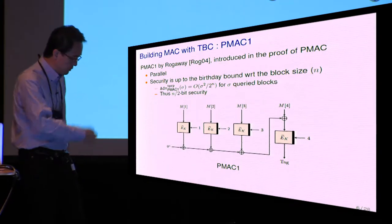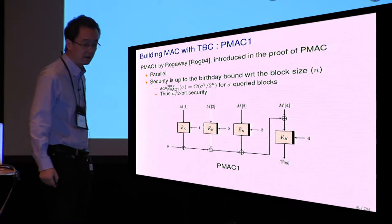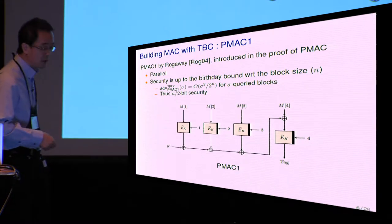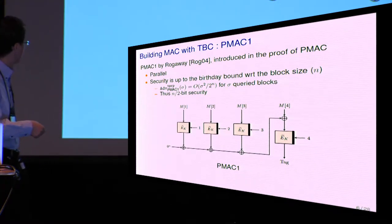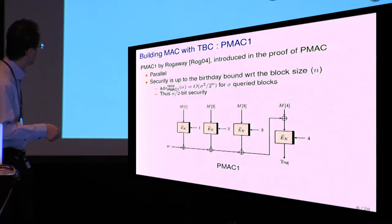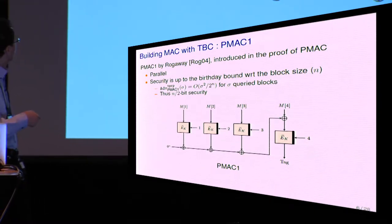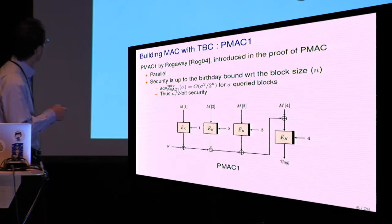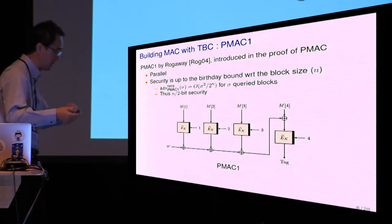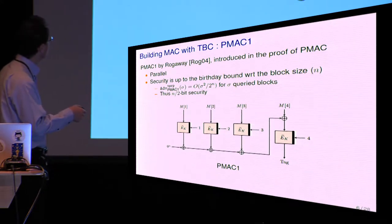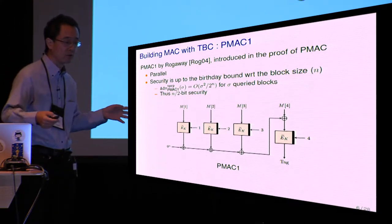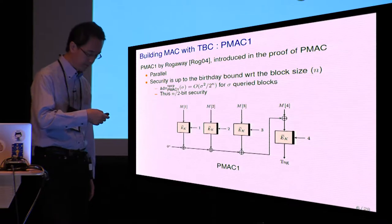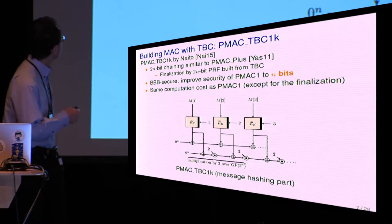Let me show several constructions for MAC using TBC. The first one is PMAC1, introduced by Rogaway in the proof of PMAC. The scheme is here. As you can see, this is fully parallelizable except the final one. But the security is also up to the birthday bound with respect to the block size again. So the maximum advantage of distinguishing PMAC1 from a pseudorandom function is up to this term, where sigma denotes the maximum number of total query blocks. Therefore, this has half of n-bit security.